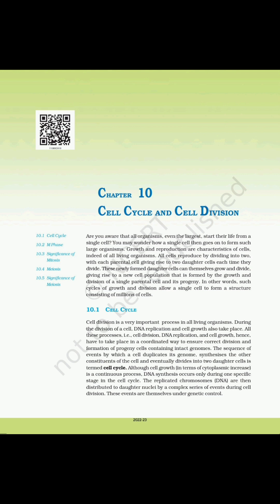Each parental cell gives rise to two daughter cells each time they divide. These newly formed daughter cells can themselves grow and divide, giving rise to a new cell population formed by the growth and division of a single parental cell and its progeny. Such cycles of growth and division allow a single cell to form a structure consisting of millions of cells.